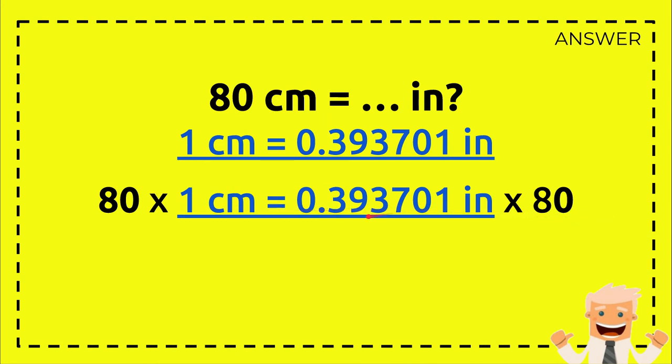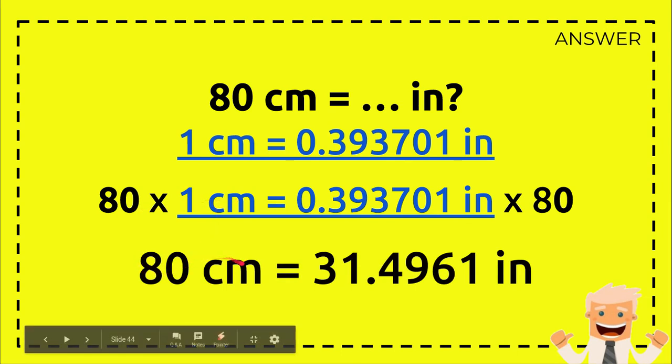Okay now 80 times 1 equals 80 centimeters, exactly just like the question, right? 80 centimeters. Okay now 80 times this number equals 31.4961 inches, and that's the answer.